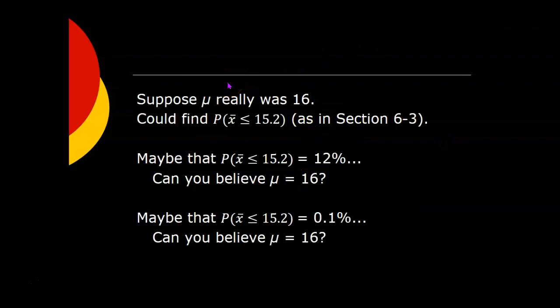So how do you decide between those possibilities? Well, one approach you could take is you could think, well, suppose mu really was 16. Suppose the population mean really was 16 chips per cookie. Then, working with that assumption, you could use the techniques we used in Section 6.3 to find the probability that you would get a sample mean that was less than or equal to 15.2, which is what you actually did find.